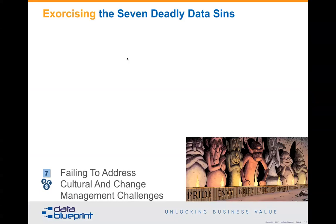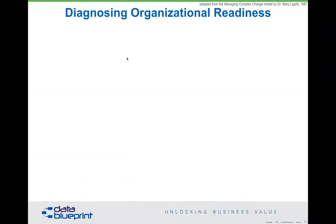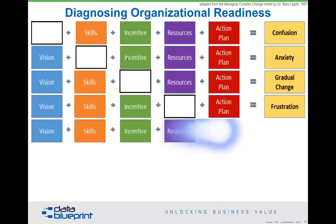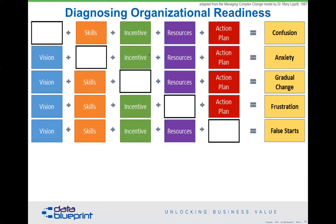I use this chart from Mary Lippert — even though it's almost 20 to 30 years old — to explain what's going on. If I see gradual change in an organization, I usually see vision, skills, resources, and an action plan, but there's no incentive. If I see frustration, I see vision, skills, incentive, and an action plan, but I don't see the resources. You look at the right-hand side of the diagram for the symptoms you're experiencing, and then figure out what's missing by looking at the left-hand side.